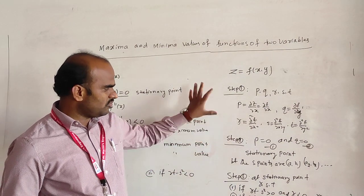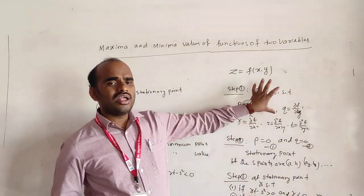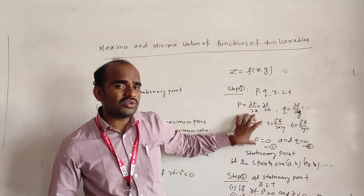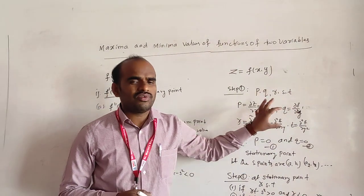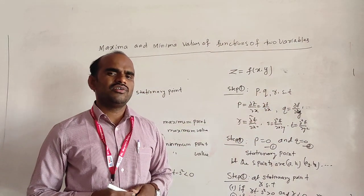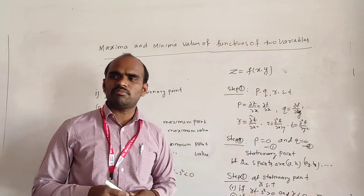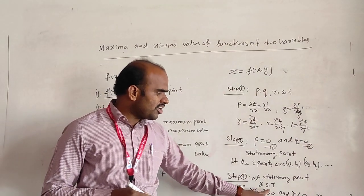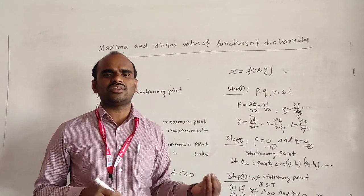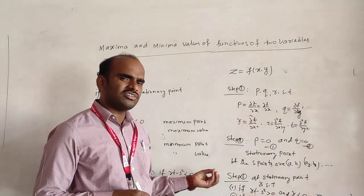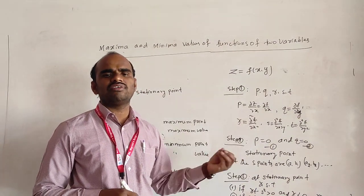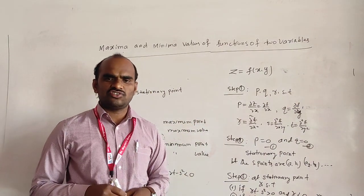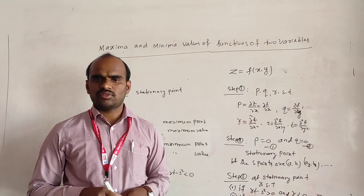This is the procedure to find the maximum or minimum of functions of two variables, and the same procedure can be extended to functions of several variables with three or more variables. In summary: find the first and second order partial derivatives, equate p and q to zero to get stationary points, then check the condition rt minus s² and the value of r to give the conclusion. Thank you very much.